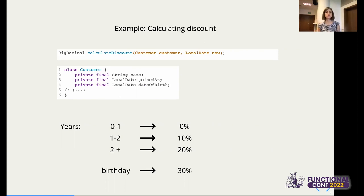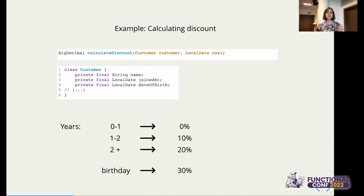What kind of properties could we think of for our example domain? One property: no matter what customer and date of today we get, the end discount is never less than zero — it has to be a positive number. Another property: no matter what the input data, the discount is never bigger than 30%. These properties don't have to fully define your entire algorithm — they can test just some part of your logic, like invariants or safe boundaries, so that no matter what data comes in, the result stays within those safe limits.